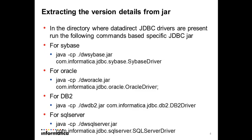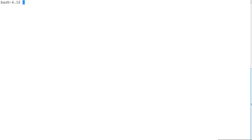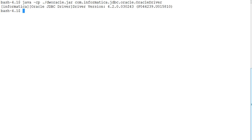This example is from a 9.1 location, so I am inside the tomcat/common/lib directory. To find out the version information about the Oracle JDBC driver, I run a command like: java -cp dworacle.jar com.informatica.jdbc.oracle.oracledriver. Running this command, the version details are: version 4.2.0.030.243.